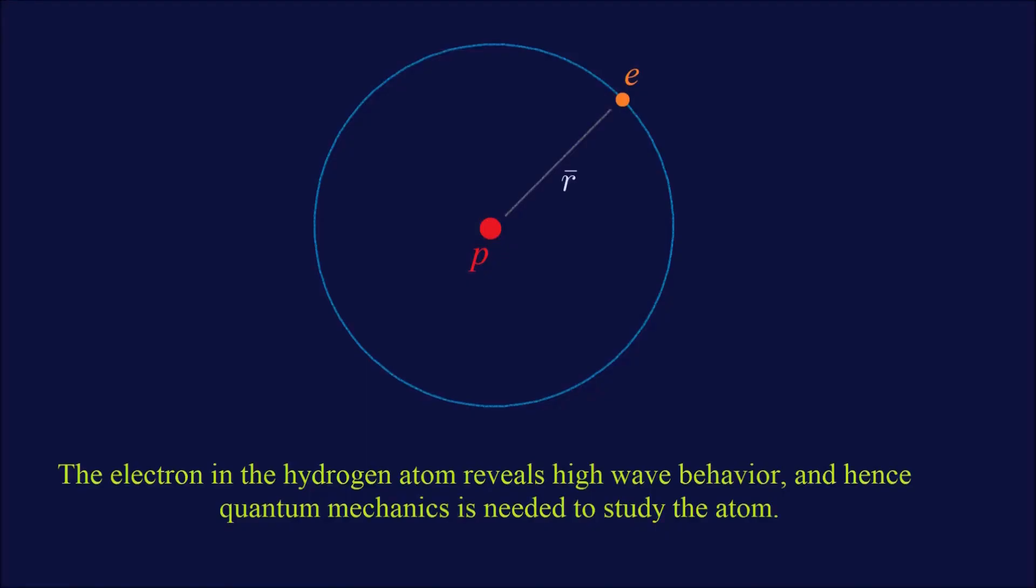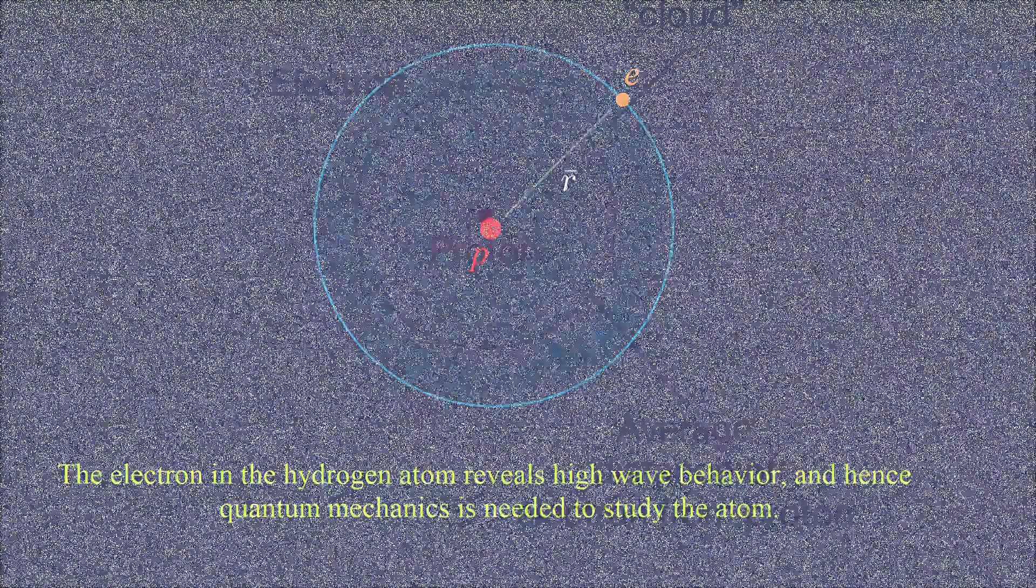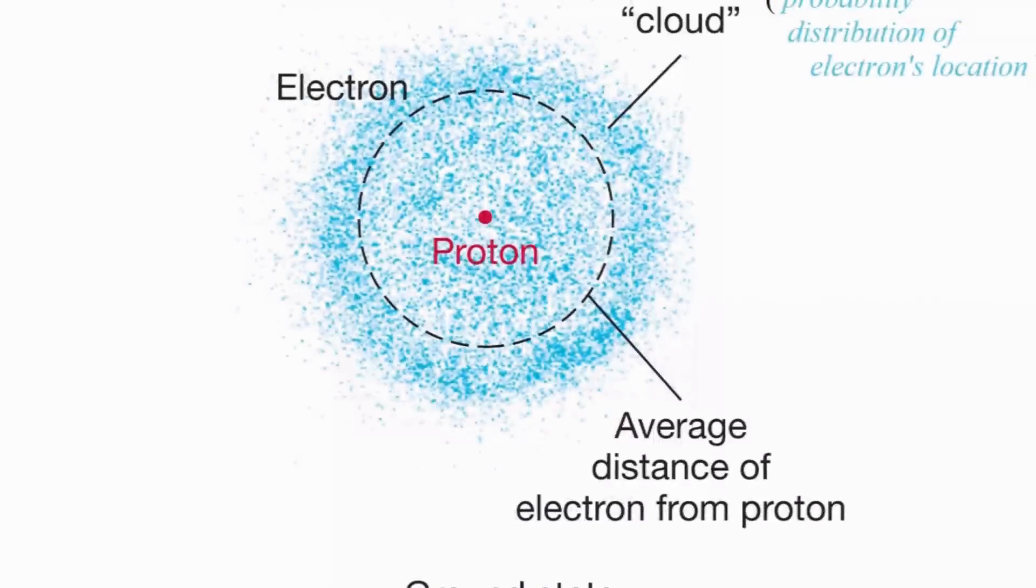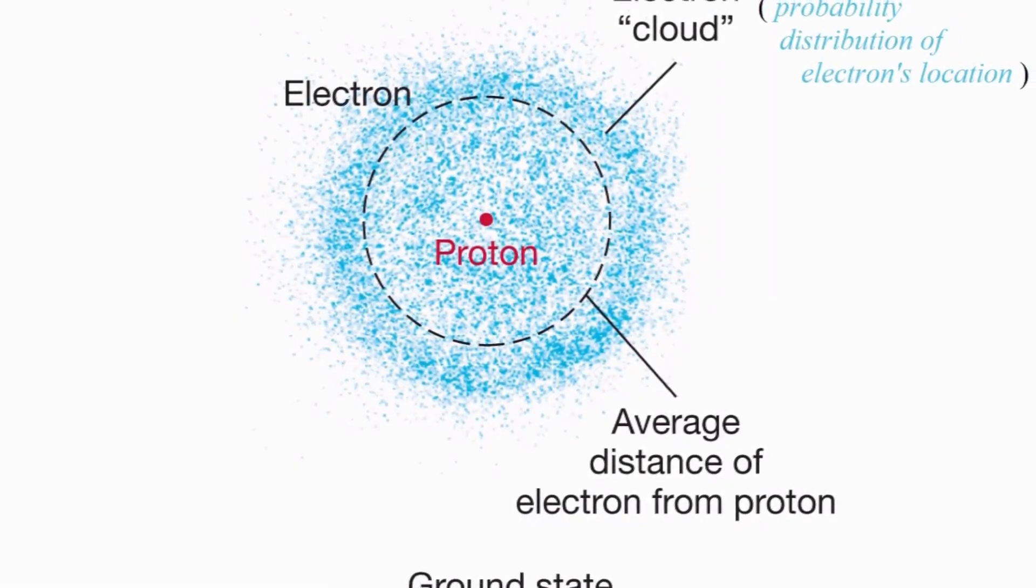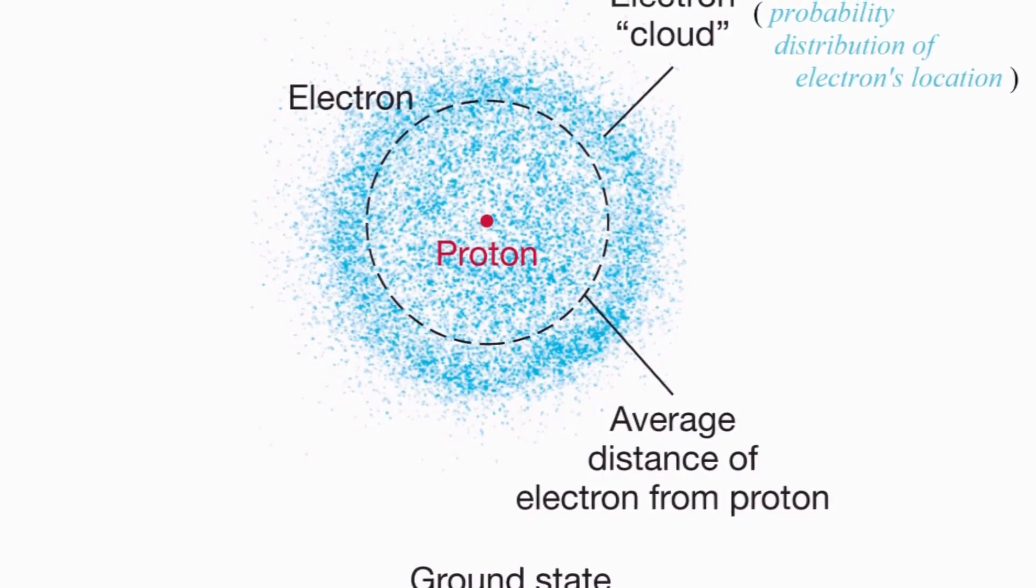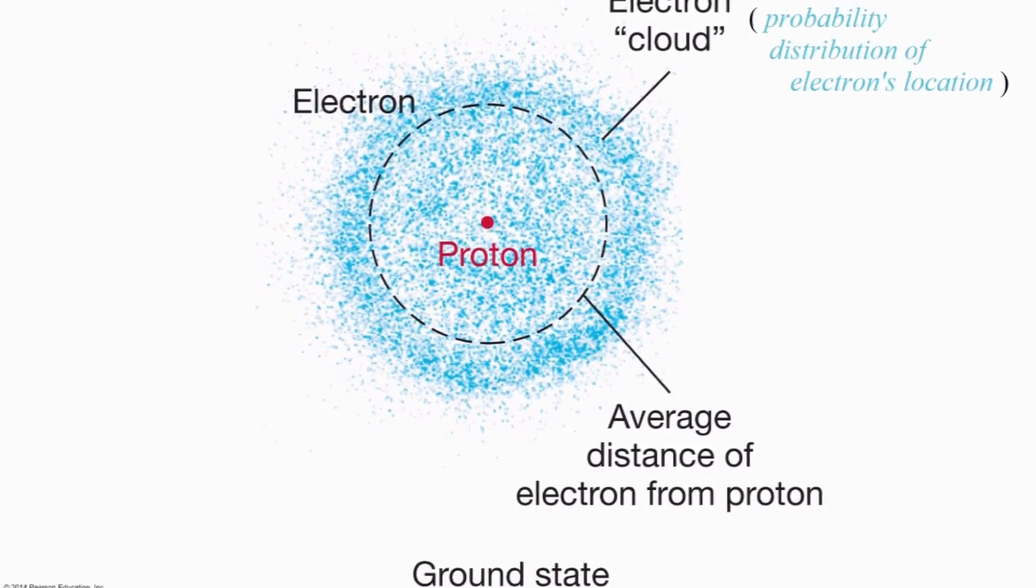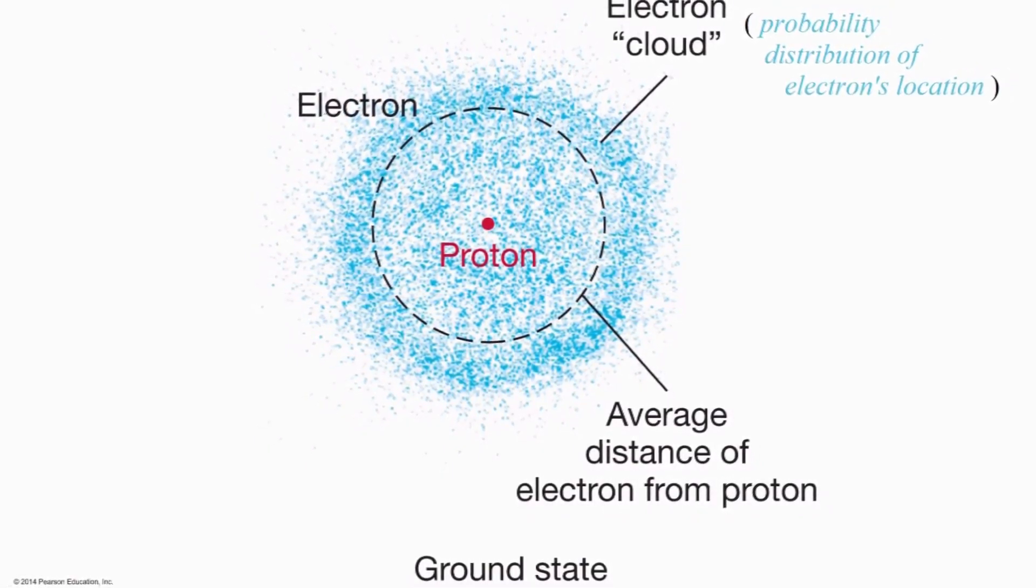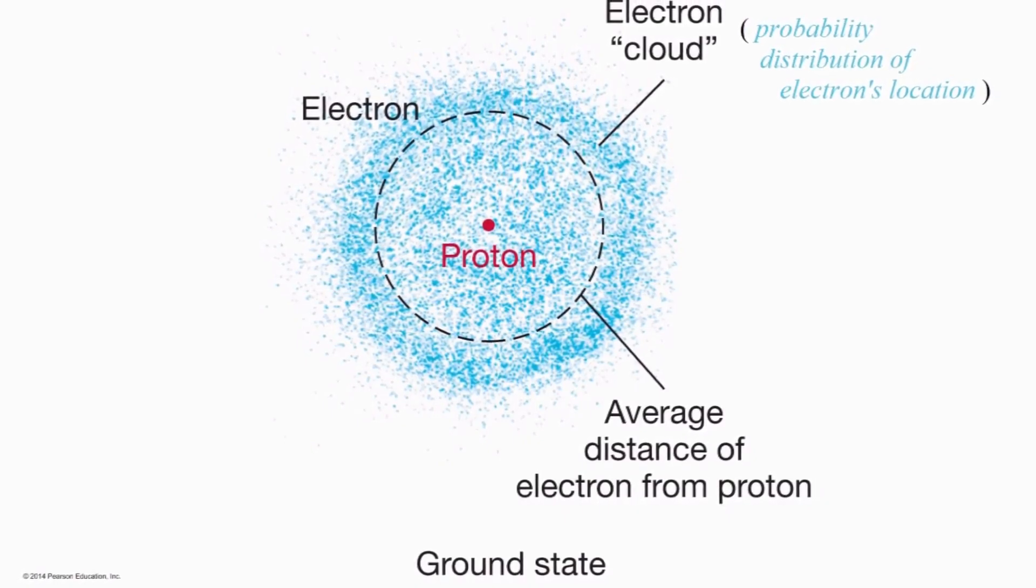Consequently, the hydrogen atom qualifies as a quantum system, necessitating the application of quantum mechanics for its study, evident when comparing the electron's wavelength to the atom's size. This issue extends further, as we will see in subsequent videos, revealing the electron's uniform probability distribution of existing across the entire circumference of the atom, rather than localized at a singular point.